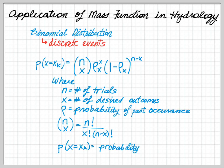What do these variables mean? n is the number of trials, and x is the number of desired outcomes. While rho is the past probability, and n choose x is n factorial divided by x factorial divided by n minus x factorial.